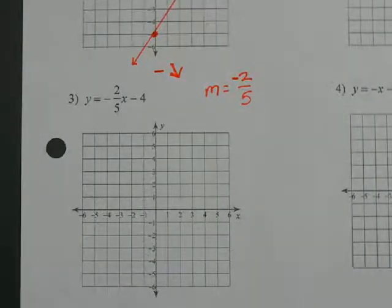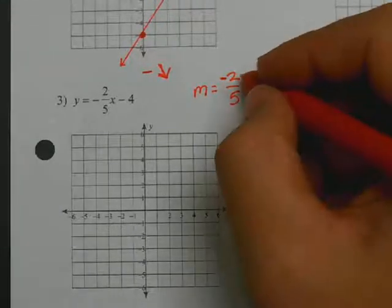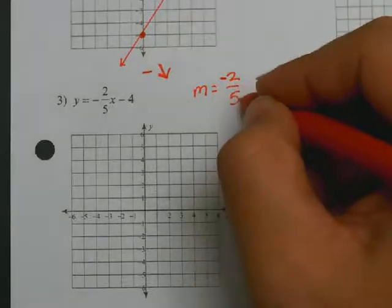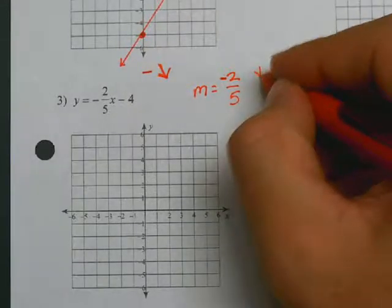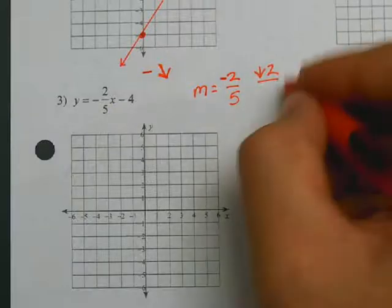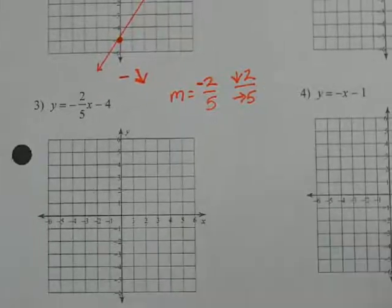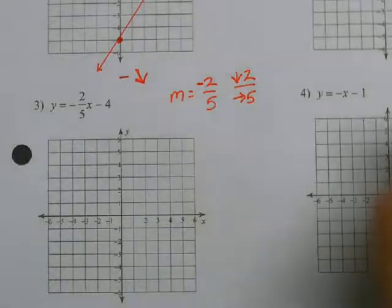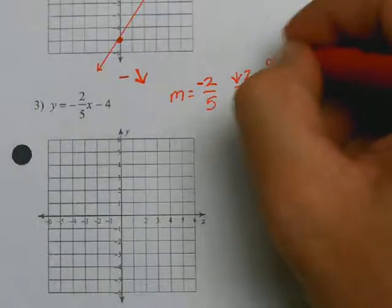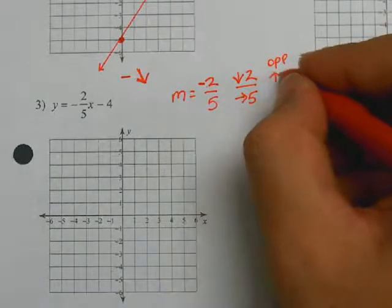From there, we're going to direct our slope. Remember, it's the change in y over the change in x. This is a negative 2, so it's going to go down 2. If you follow my steps, you're always going to go to the right, so right 5. Down 2, right 5 — down 2 because that's a negative, right 5 because that's a positive. Now you do your opposite: the opposite of down 2, right 5 is up 2 and left 5.